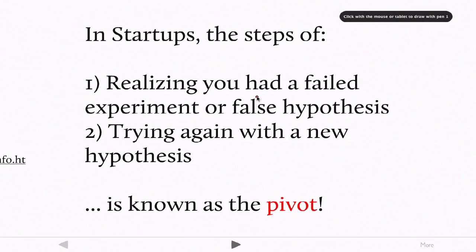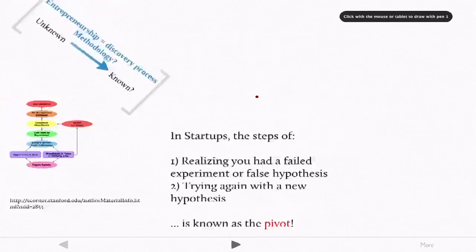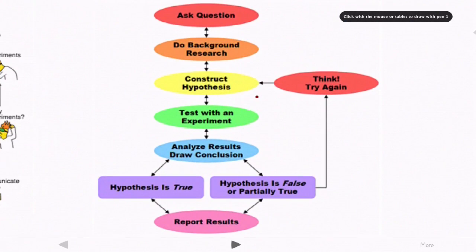And so in startups, these steps that I just mentioned of realizing that you had a failed experiment or a false hypothesis and trying again with a new hypothesis is known as the pivot. And like we mentioned earlier, this term, the pivot, has become so ingrained in the startup world and startup culture in Silicon Valley that there's even starting to be comics and satire about it. So anyway, back to the scientific method.